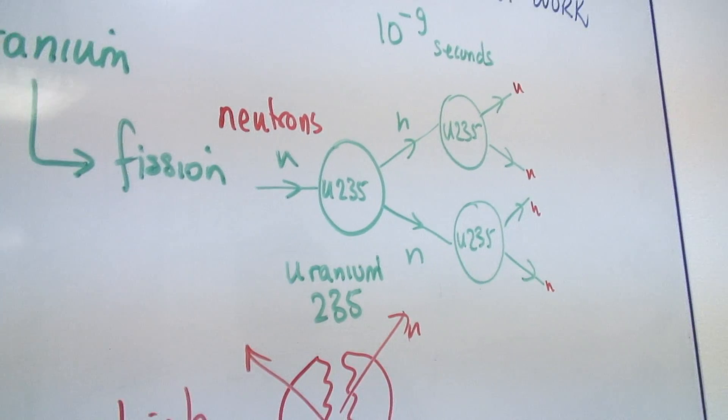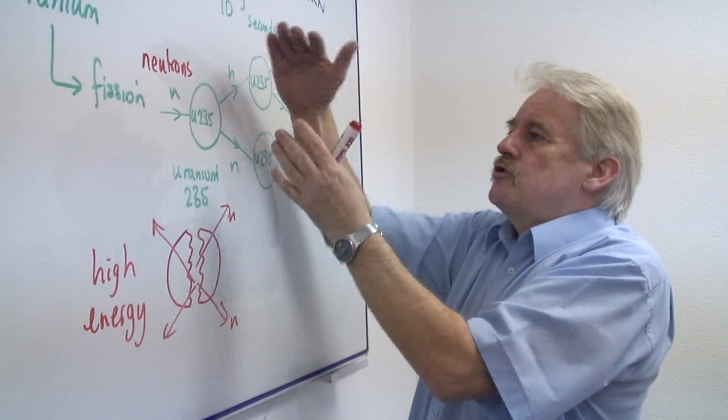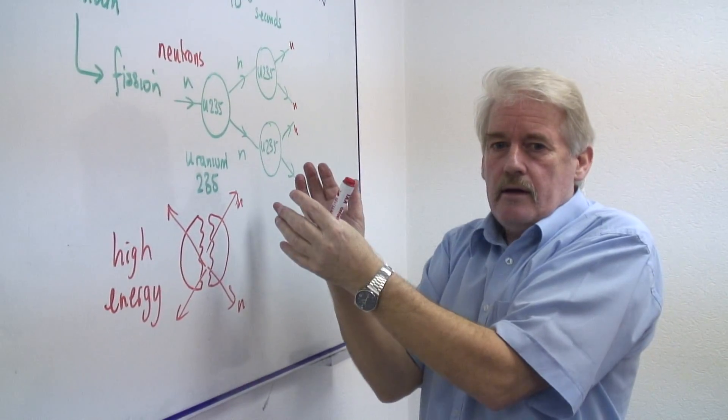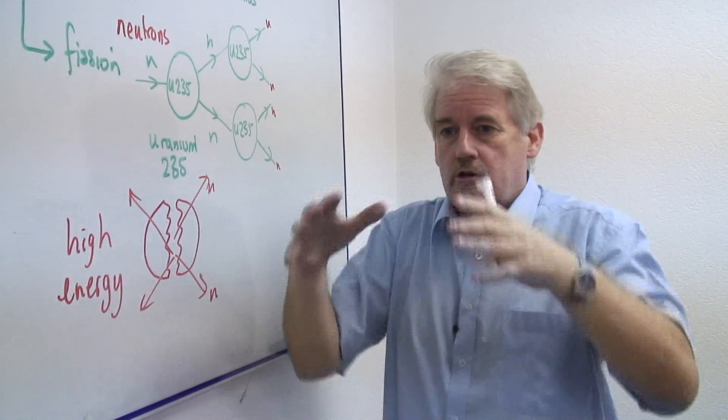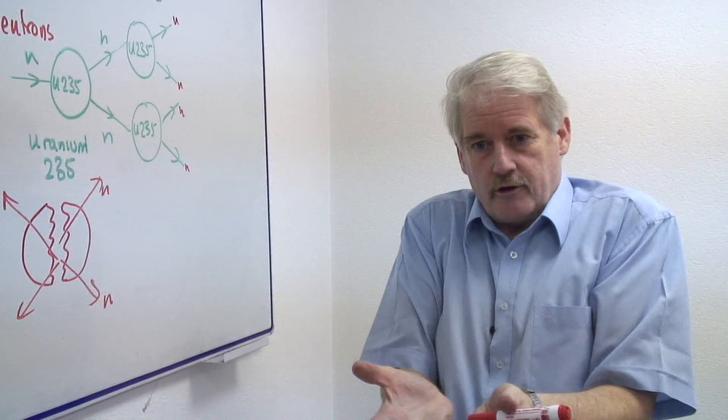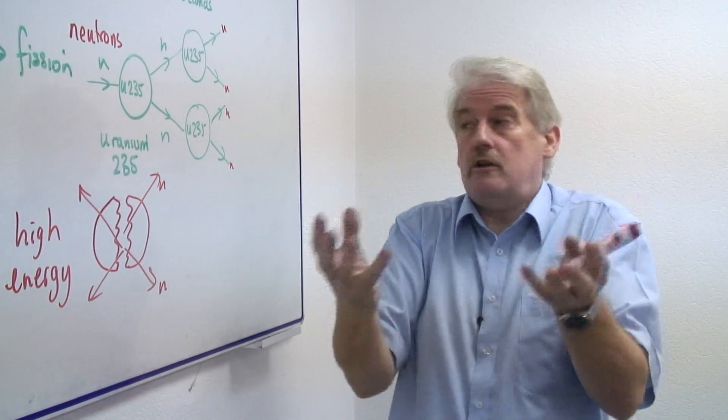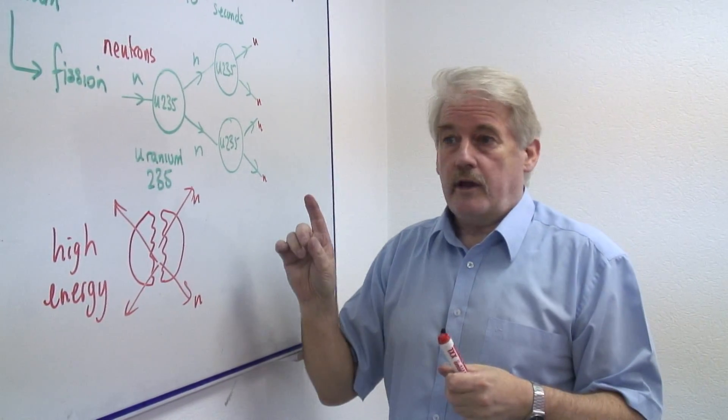So in a nuclear reactor, what we try and do is bring the uranium-235 nuclei atoms close together so that the neutrons don't have a chance to escape. So if you have a big piece of uranium, then the neutrons formed inside are almost certain to hit another uranium atom. That's one thing.